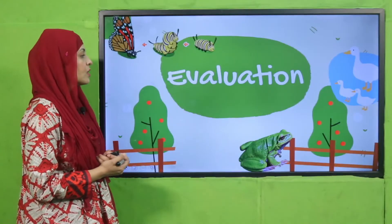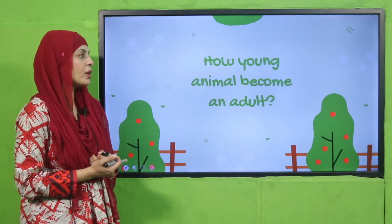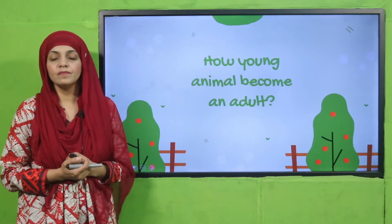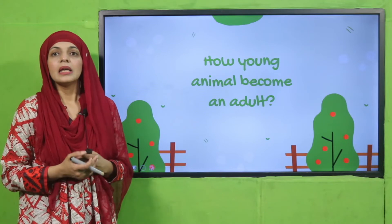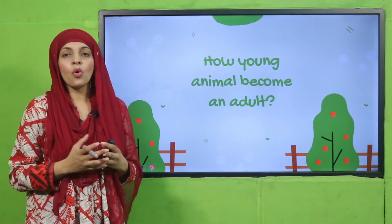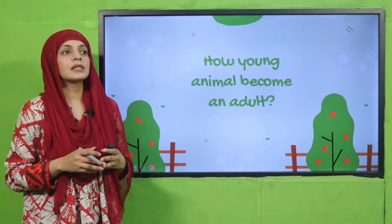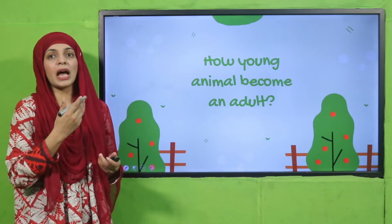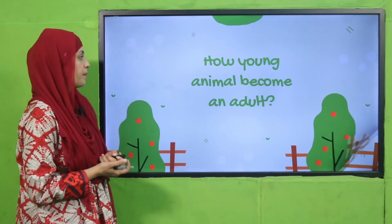Now is the time for evaluation. How do young animals become adults? They grow, they become strong, and they become independent — that is how they become adults.